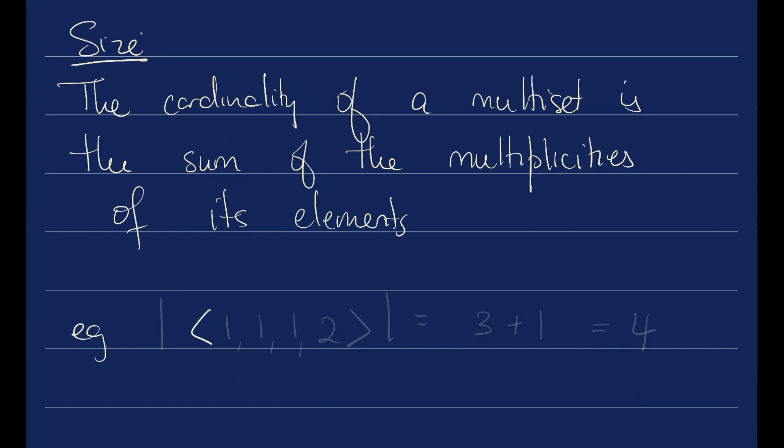For example, the multi-set 1, 1, 1, 2. The cardinality is going to be, well, we have the element 1 with multiplicity 3 plus the element 2 with multiplicity 1. It's going to be 4.